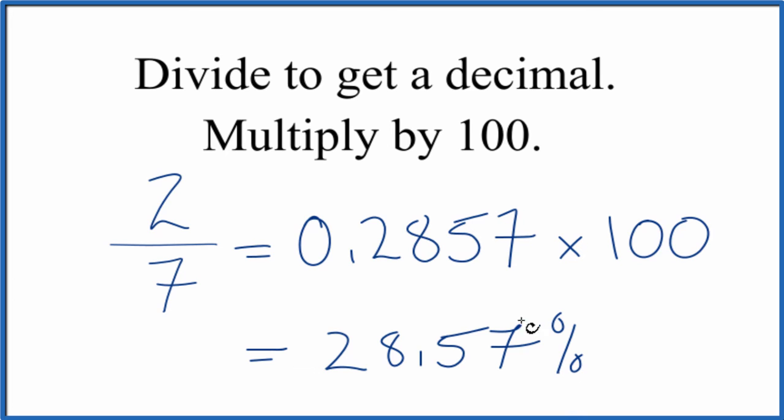So to recap, we divided two by seven to get our decimal, and we multiplied by 100, and that gave us our percent. This is Dr. B converting two-sevenths to a percent. Thanks for watching.